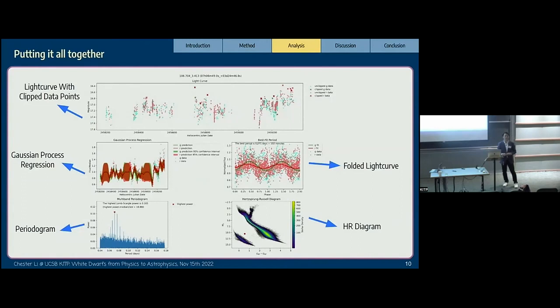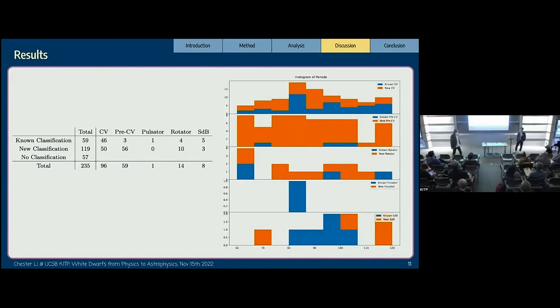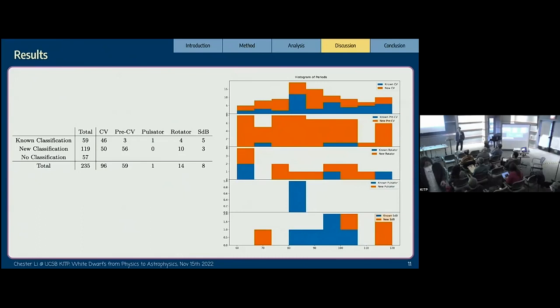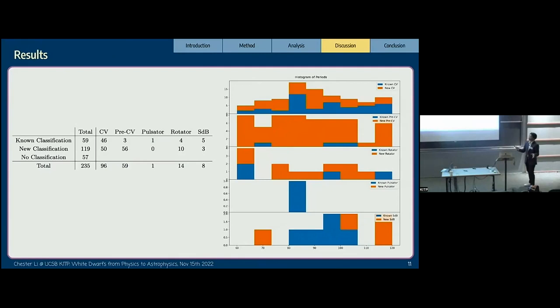Great work. I'm surprised in a good way by the high number of pre-CVs that you found. Is that consistent with volume limited or flux limited estimates of the number of pre-CVs at that orbital period? The statistics from this table are based on the HR diagram and photometry light curve. There is some uncertainty in how well we make those judgments. We still need follow-up to confirm, but this is our best judgment.